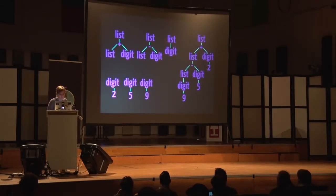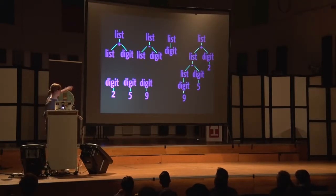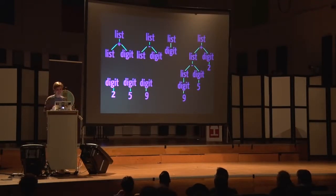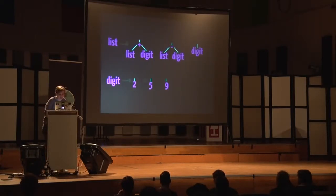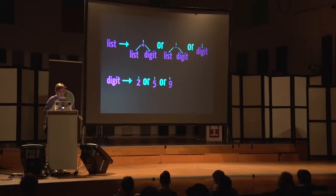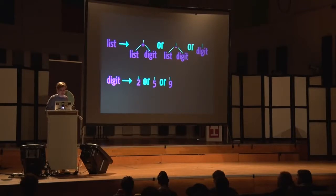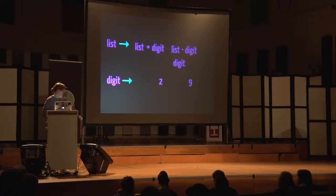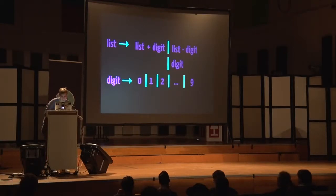A list goes to a list plus digit, or a list minus digit, or a digit. And a digit goes to a digit. So we used two rules. They would look more like this: on the left of the arrow are the internal nodes — list and digit — and on the right are all possible children constellations of these internal nodes. Because it's really hard to make these tree snippets readable by a computer, we could write it in a string notation — away with all these branches.